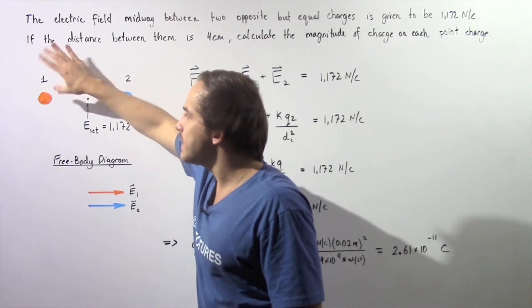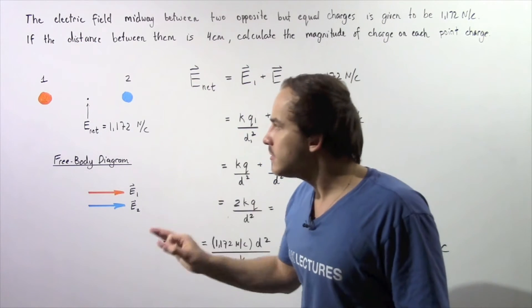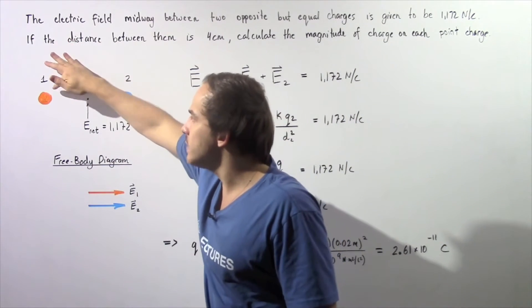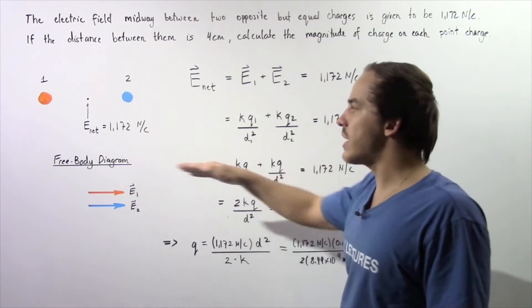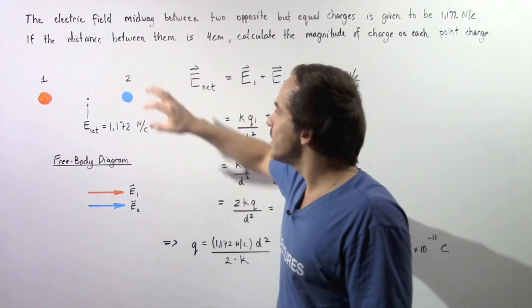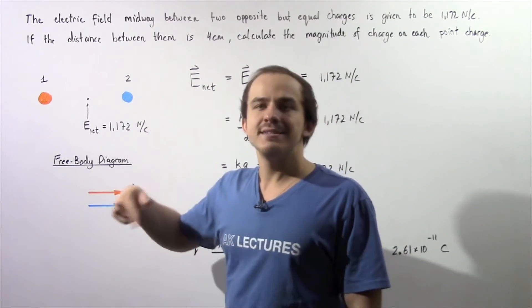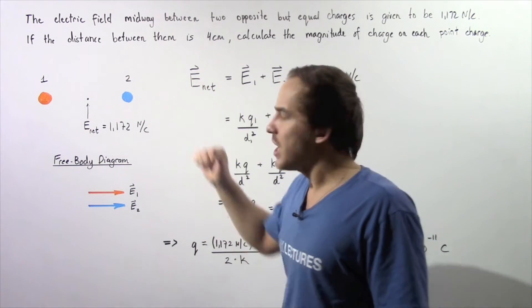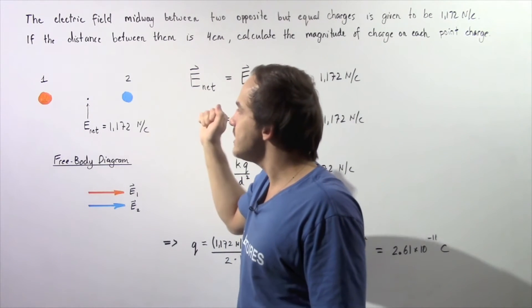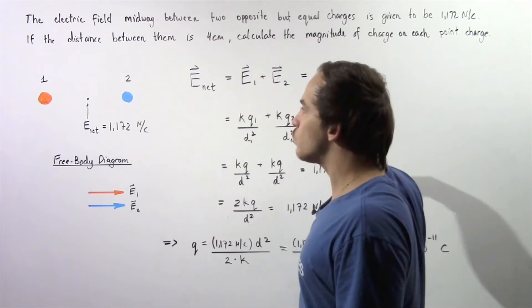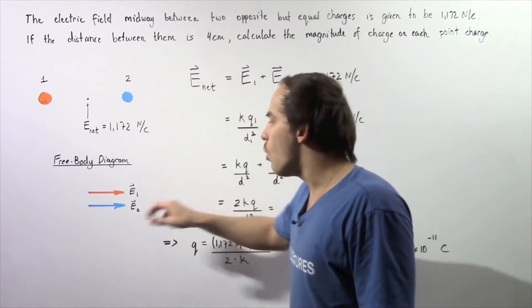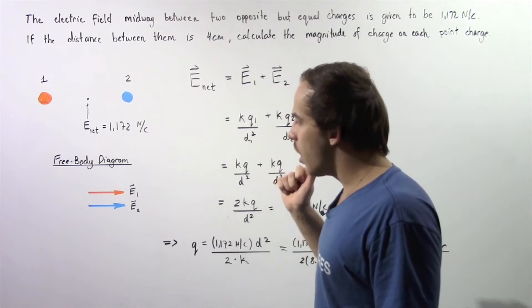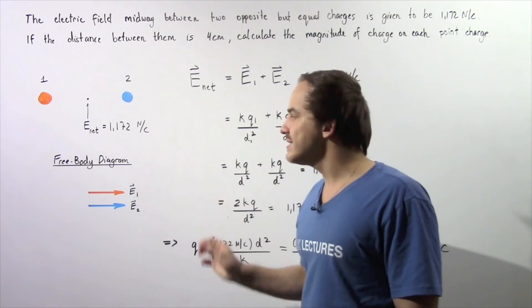Let's suppose this is our positive point charge and this is our negative point charge. Because the first charge is positive, any field line it creates will point directly outward, so E1 points in the positive direction along the x-axis. For the negative point charge, all field lines point directly into it, so starting from the midpoint, E2 also points in the positive direction along the x-axis. So E1 and E2 point in the same exact direction.